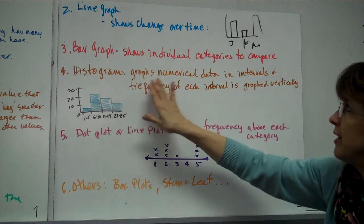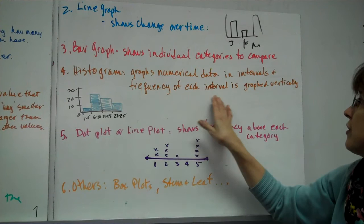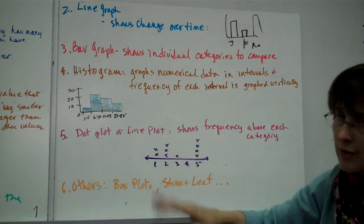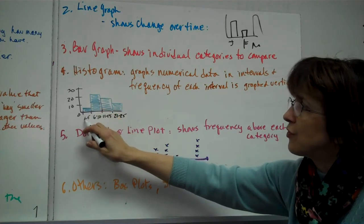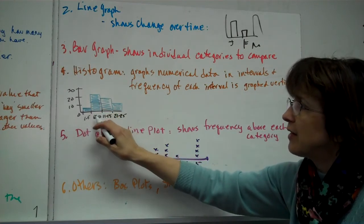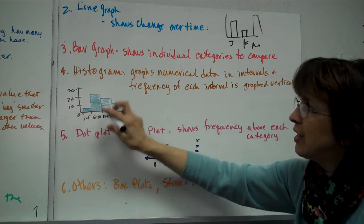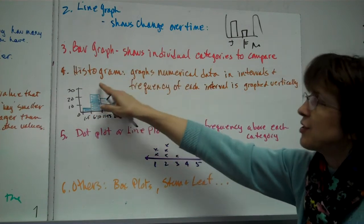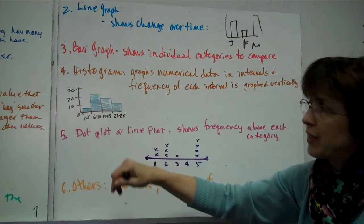Histogram is like a bar graph, and it graphs numerical data in intervals, and the frequency of each interval is graphed vertically. In other words, you have something like this. And the graphs, the bars touch each other, because it's in intervals. So from 1 to 5, and then from 6 to 10, there's like, no in between. So you have to graph it right next to each other. So really a bar graph is a, I mean, a histogram is a bar graph where the graphs, where the bars are intervals, and so there's no space in between.